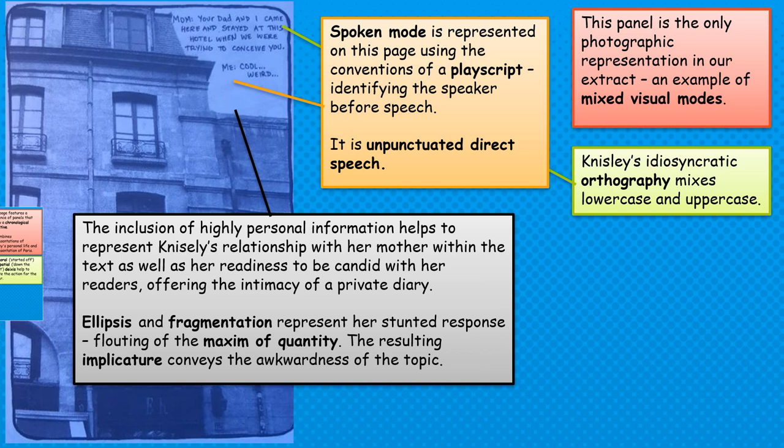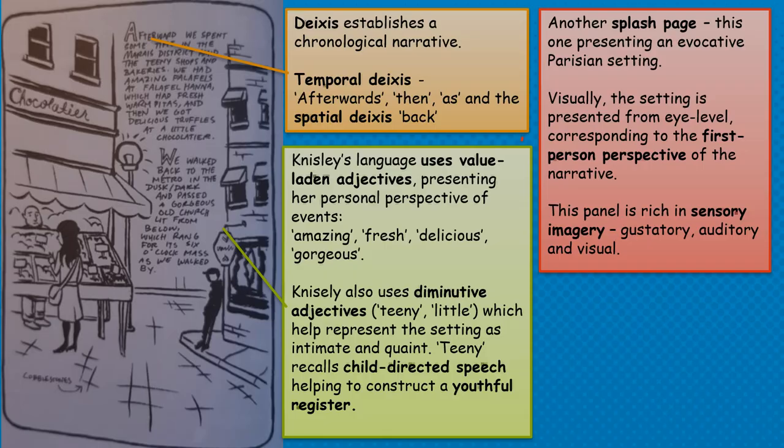We could use conversational analysis here — if you're familiar with the theories in pragmatics and how they can be applied to analysing spoken discourse. We can look at her response to being told that her mum tried to conceive her in this building as using fragmentation and ellipsis — this stunted response that flouts the maxim of quality. There's an implicature there which conveys the awkwardness of the topic. Nisley presents that perhaps she doesn't have much to say about this, and who can blame her.